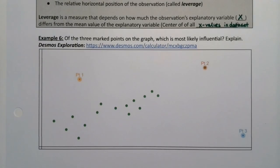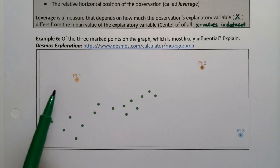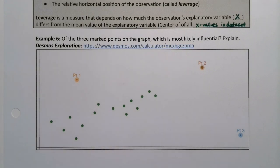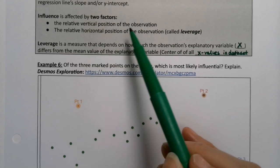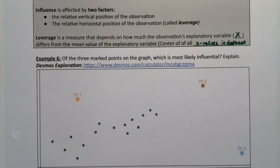We have a graph here, and it will become clearer when we look at the three points that are especially highlighted. We have point one, point two, and point three. What you want to think about is whether the points have both a different relative vertical position and a different relative horizontal position compared to the other points.